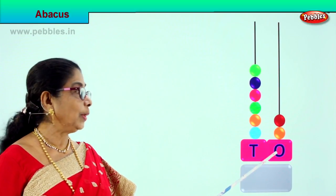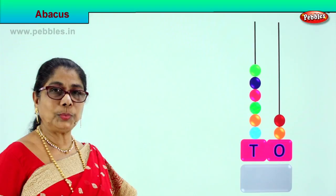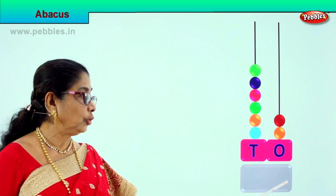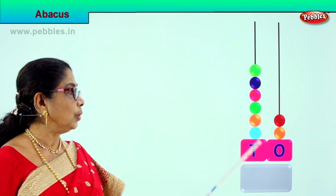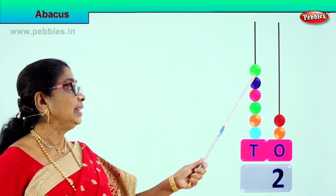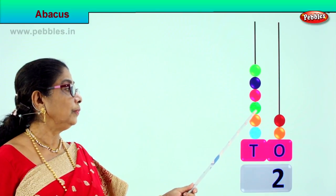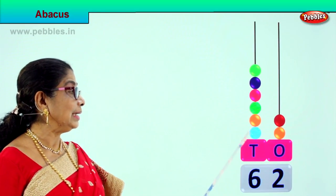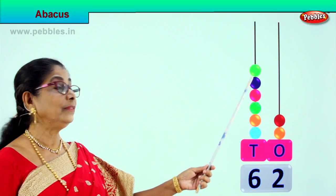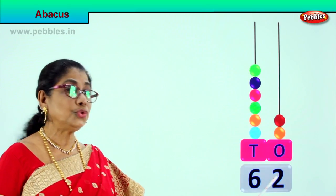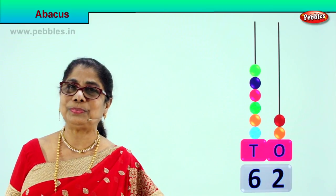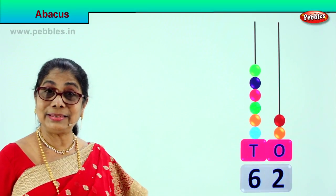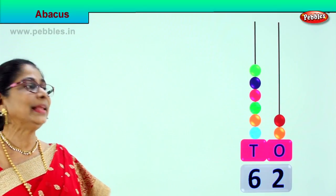In the ones place we have one, two beads — so we write two, meaning two ones. Now let's go to the tens place. In the tens place we have 1, 2, 3, 4, 5, 6 — how many tens are there? Six. That is sixty: 10, 20, 30, 40, 50, 60. Six tens and two ones is sixty-two. This is tens, this is ones. Did you enjoy? Good, let's take another sum.